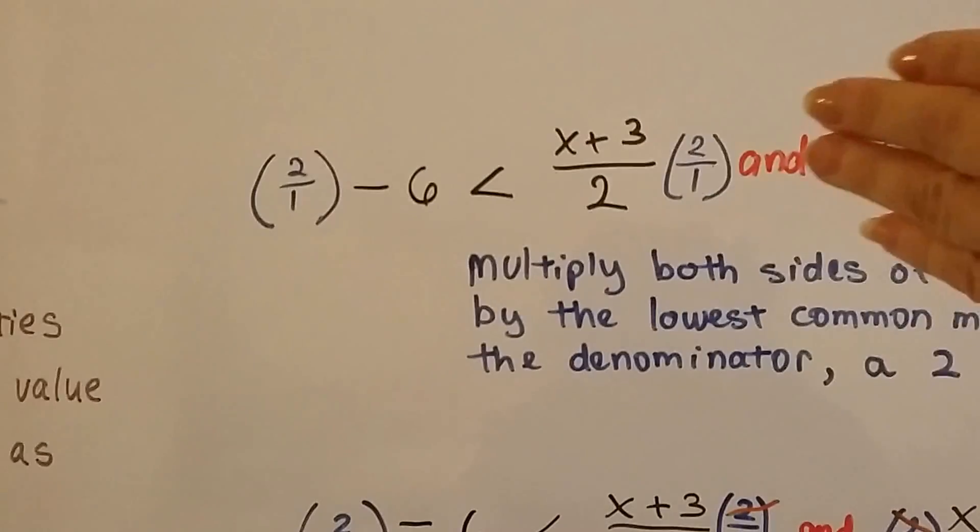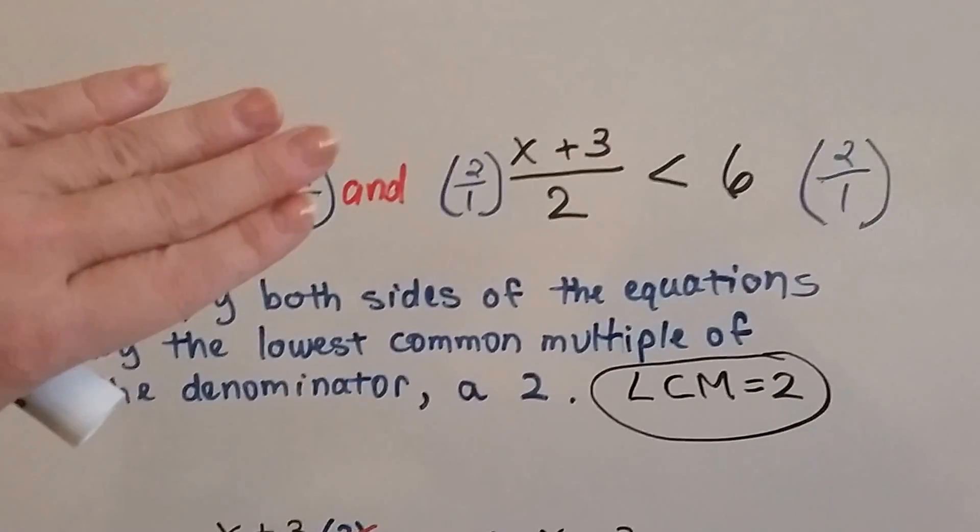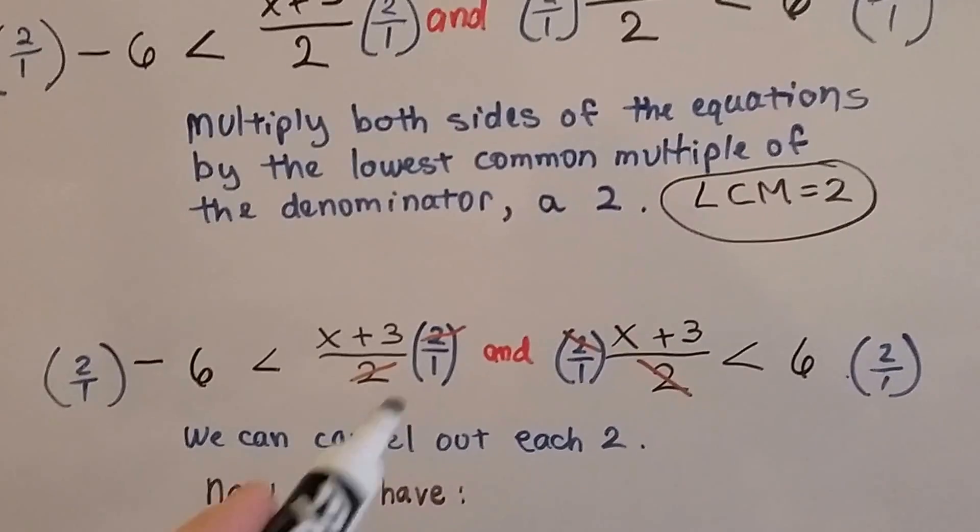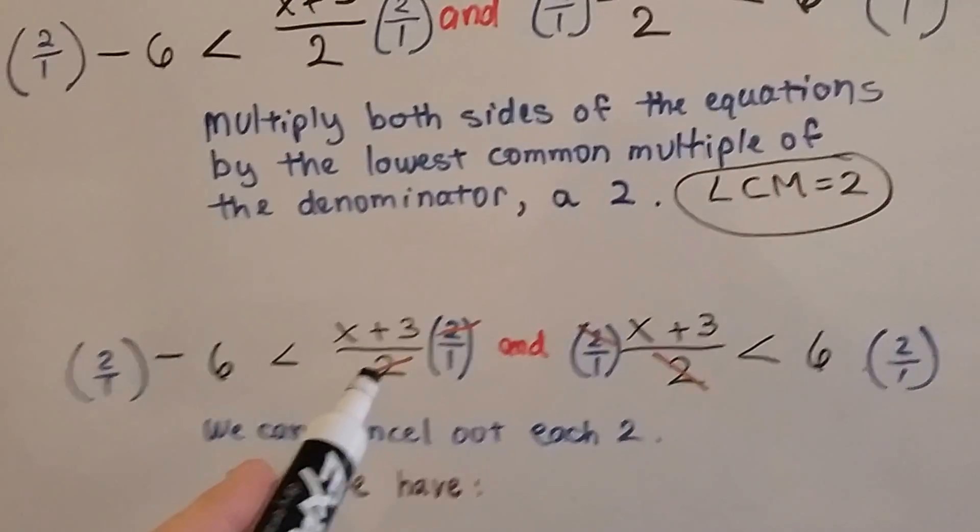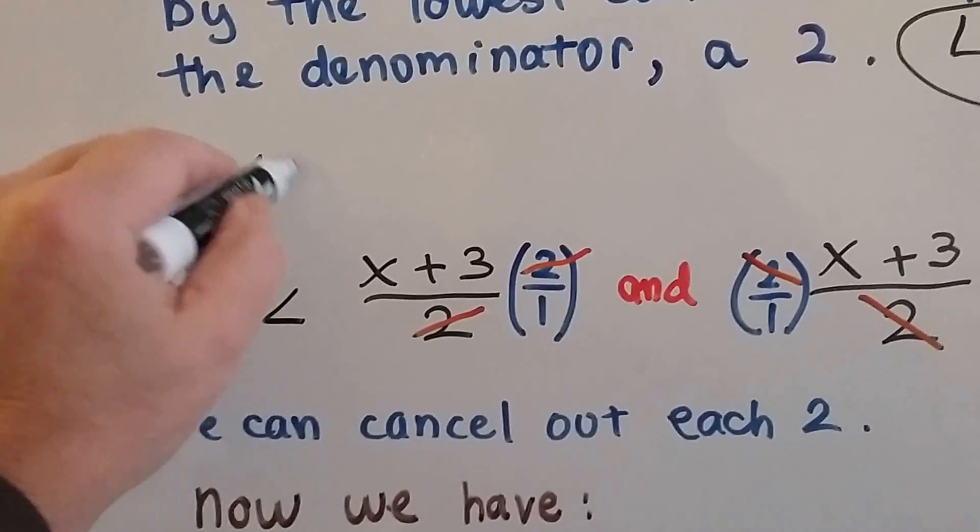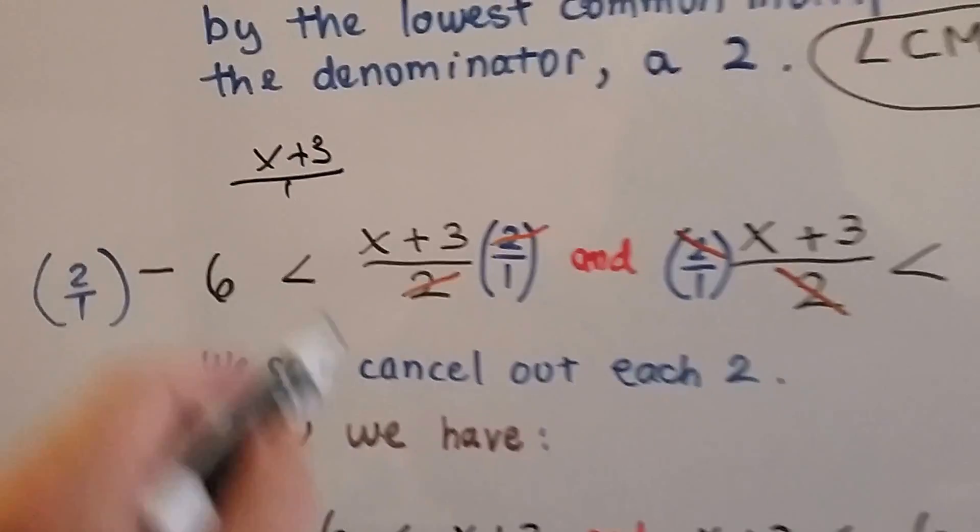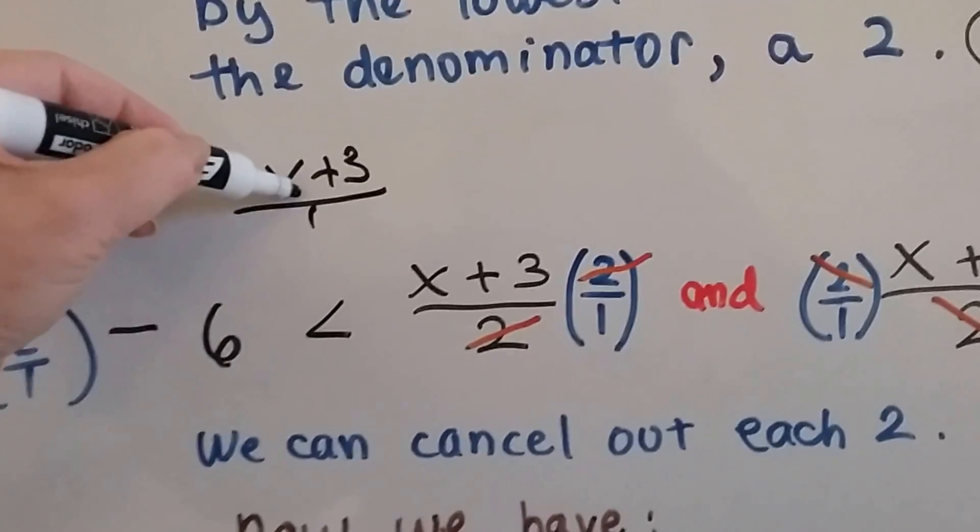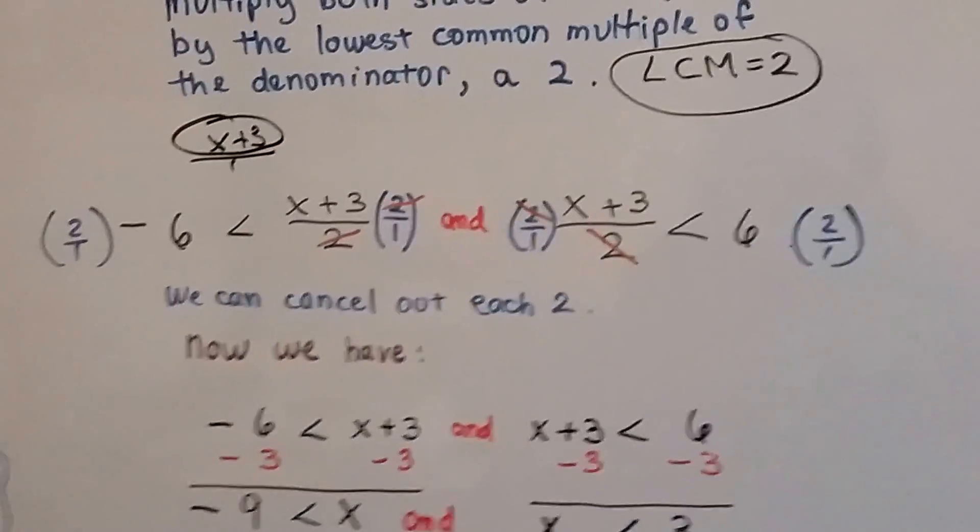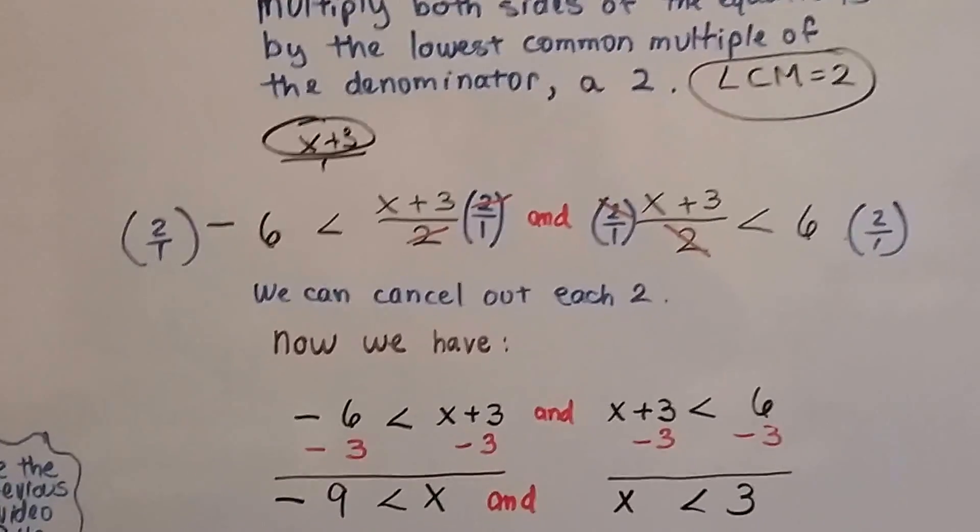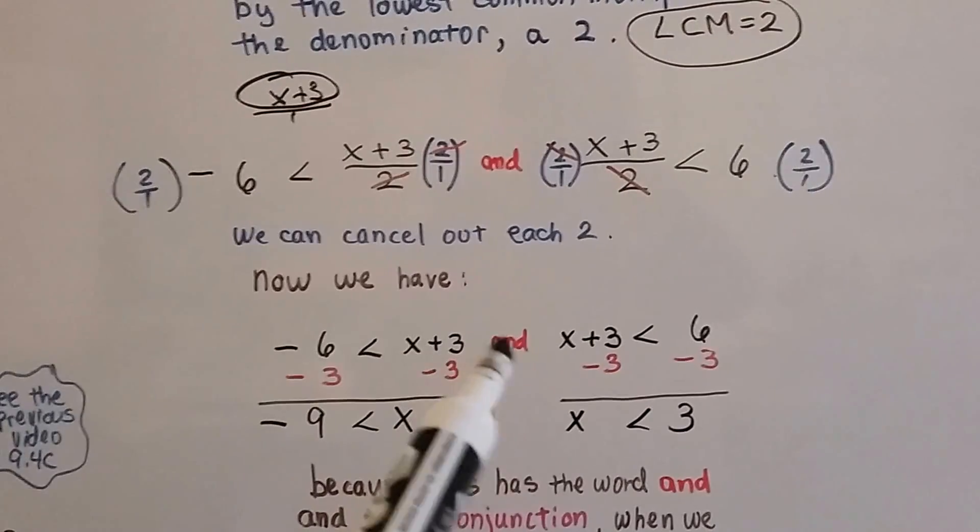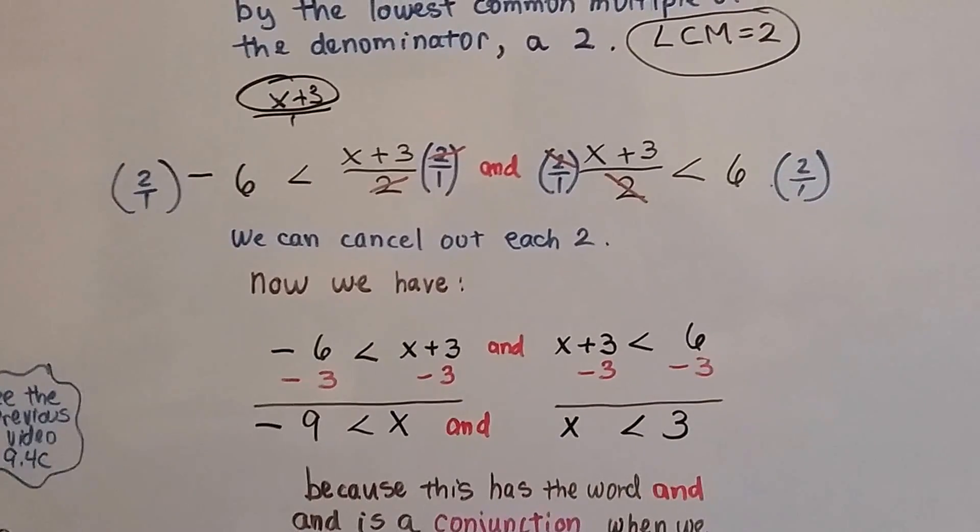So each side of this inequality is being multiplied by a 2. And because this is written in fraction form, we can do it as a 2 over 1. And we do the same thing for this side. Each side of the inequality is going to be multiplied by 2 over 1. What happens is this 2 up here cancels out that 2, and this 2 up here cancels out that 2. And what do we get when we cancel those out? We get x plus 3 over 1. And any value as a fraction over 1 is that value. So what ended up happening was we got rid of the fraction. So we canceled out 2 on each side because it was the lowest common multiple, the least common multiple. So now we have negative 6 is less than x plus 3, and x plus 3 is less than positive 6.